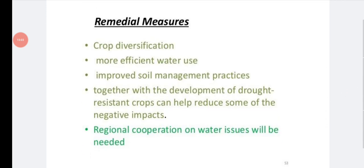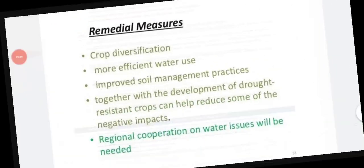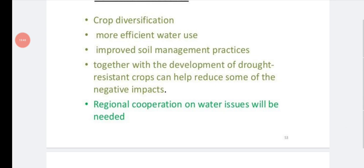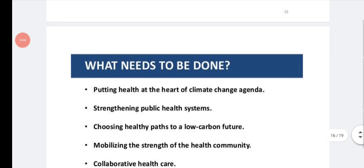What is the remedial measure? First one is crop diversification. You can grow different crops in different seasons and shifting cultivation also you can do. And more efficient water use, improved soil management practices. You can use different modern techniques in soil management. Together with the development of drought resistant crops can help reduce some of the negative effects. So there are crops like drought resistant things that can grow even during drought. They need only little amount of water. And regional cooperation on water issues will be made. Cooperation on the government level is needed.